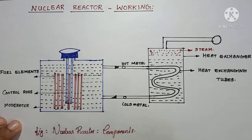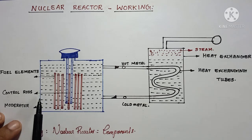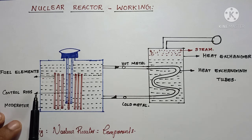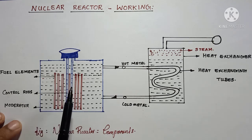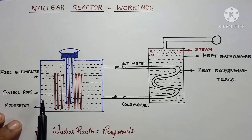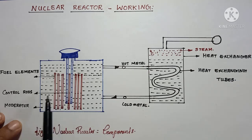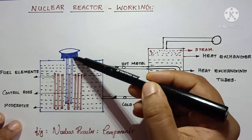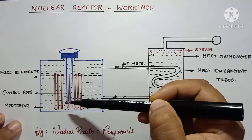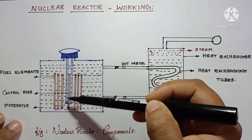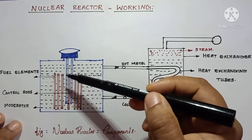The next important component is control rods. We know that this nuclear fission is a chain process — a continuous and chain process — so it is necessary to control the process. For this, we can use control rods. The function of the control rod is to control the chain reaction.